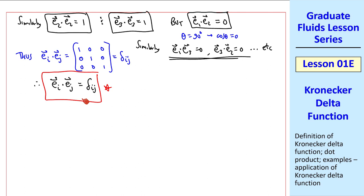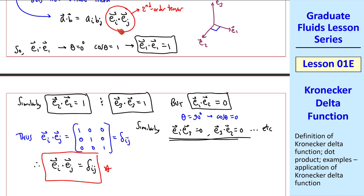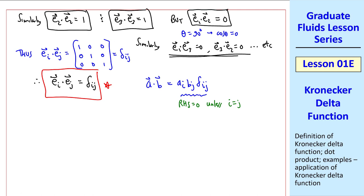Returning to our dot product of a and b, we can now write a dot b equal a i bj delta ij. But now think about this right-hand side. This right-hand side is 0, unless i equal j. When i does not equal j, this whole right-hand side is 0, and this therefore reduces to a i b i. We call this contraction, because we've lost one of the dummy indices, and have a much simpler equation. So finally we can write that a dot b is a i b i.